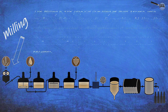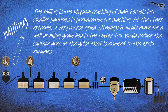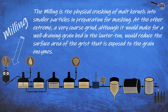Milling is the physical crushing of malt kernels into smaller particles in preparation for mashing. At the other extreme, a very coarse grind, although it would make for a well-draining grain bed in the lauter tun, would reduce the surface area of the grist exposed to the grain enzymes.